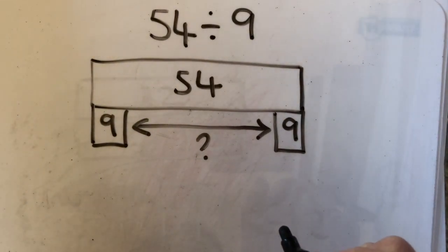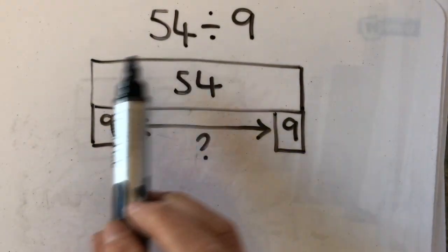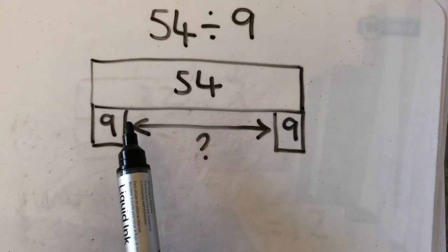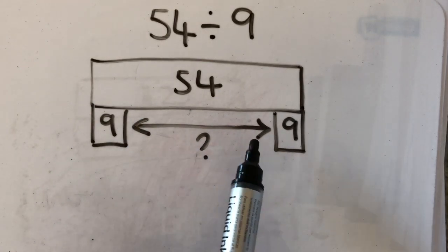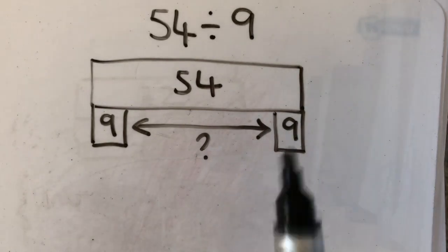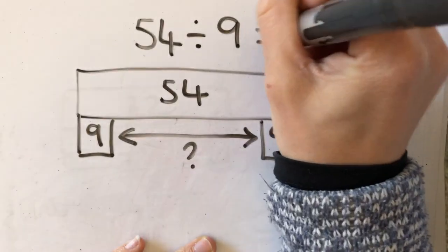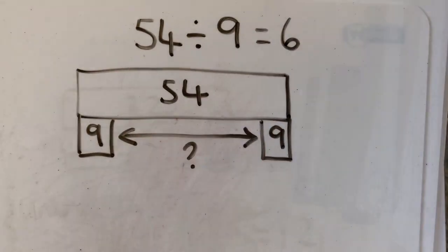So I would represent that here because I have got 54 as my total. I know that each group is worth 9 but I don't know how many groups I've got. I can then do the calculation. I can see that actually I would need six groups.